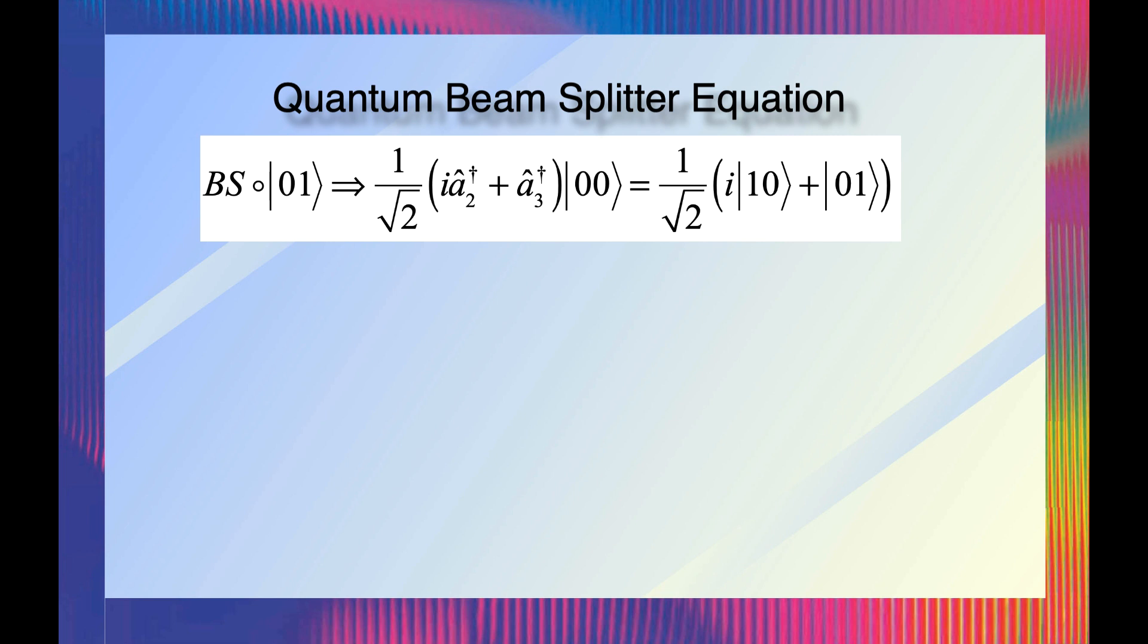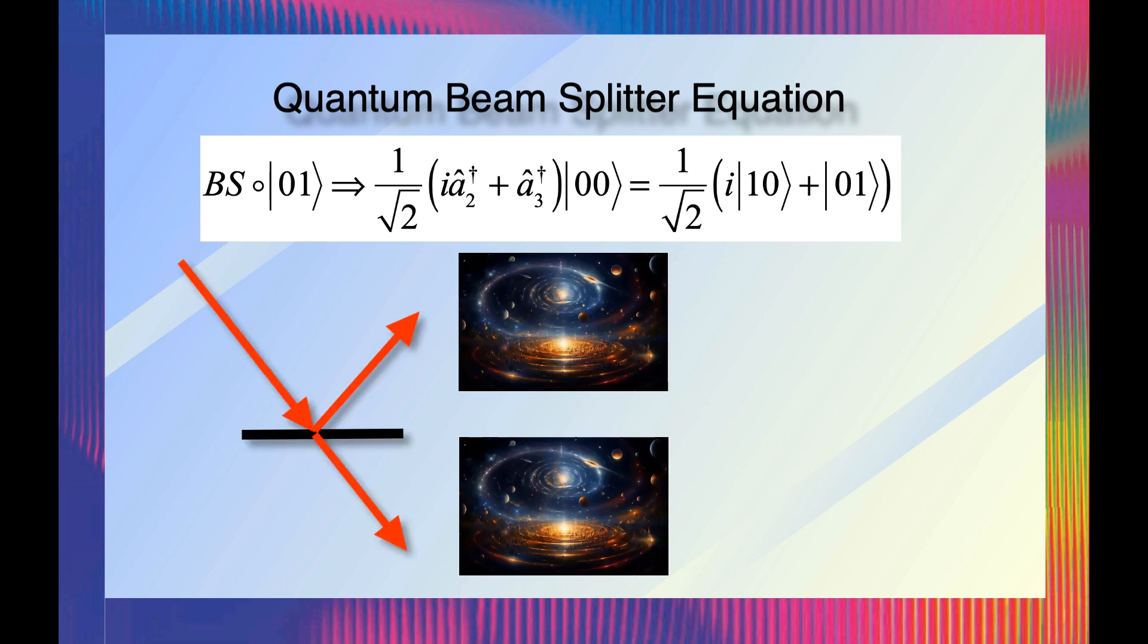The resulting output is entangled. Either the single photon exits one port or it exits the other. In the many worlds interpretation, the photon exits from one port in one universe and it exits from the other port in another universe. On the other hand, in the Copenhagen interpretation, the two output ports of the beam splitter are simply anti-correlated.